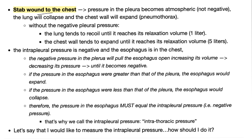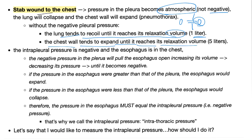Let's say someone stabbed you in the chest — there is a stab wound, and now your pleura is connected to atmospheric pressure, so the pressure becomes atmospheric. Not negative, not positive — atmospheric. If your intrapleural pressure is not negative, the lung tends to recoil until it creates its relaxation volume, which is 1 liter. The chest wall tends to expand until it creates its relaxation volume, which is 5 liters, because the negative intrapleural pressure was due to the dynamic harmonious antagonism between the chest wall wanting to expand and the lung wanting to recoil.